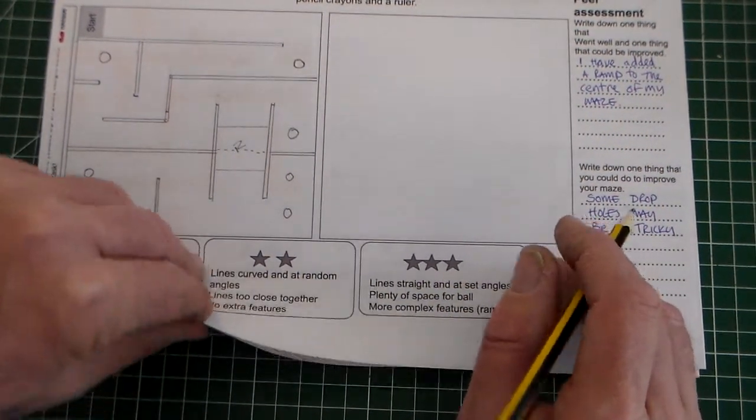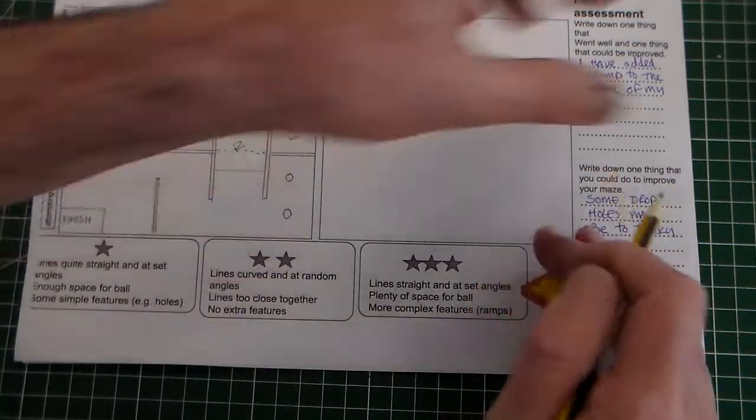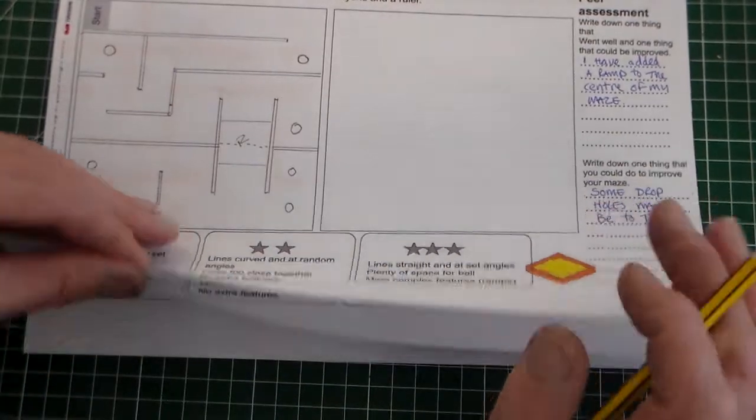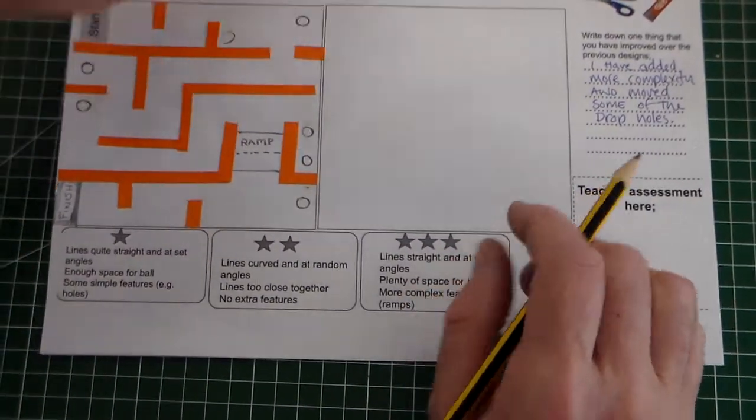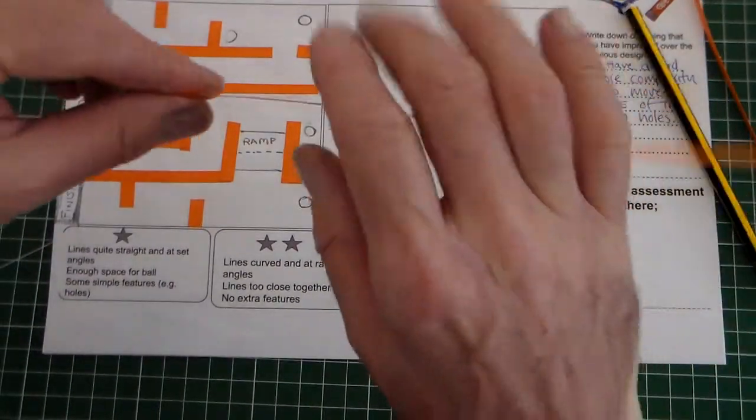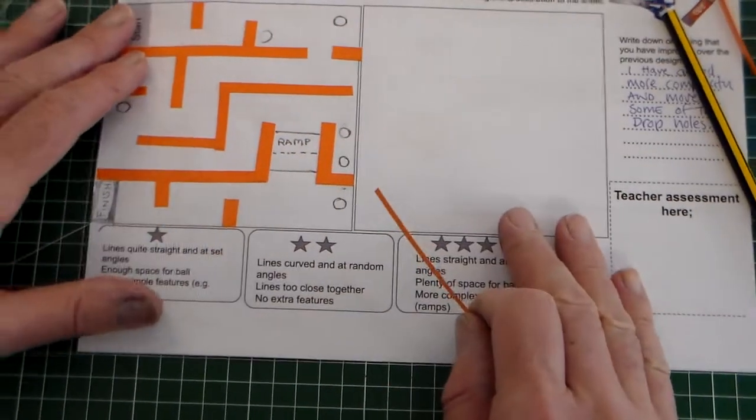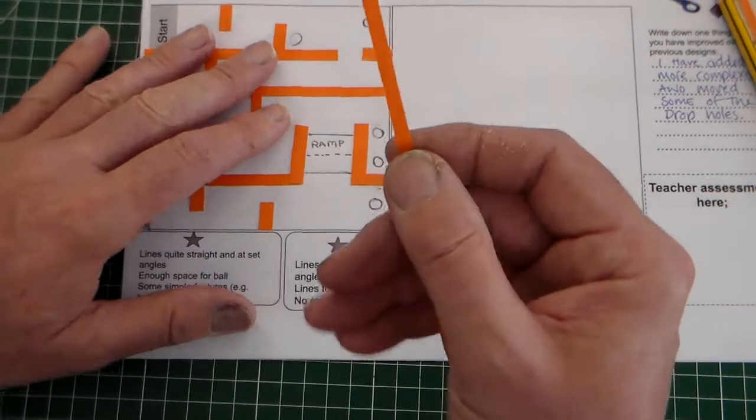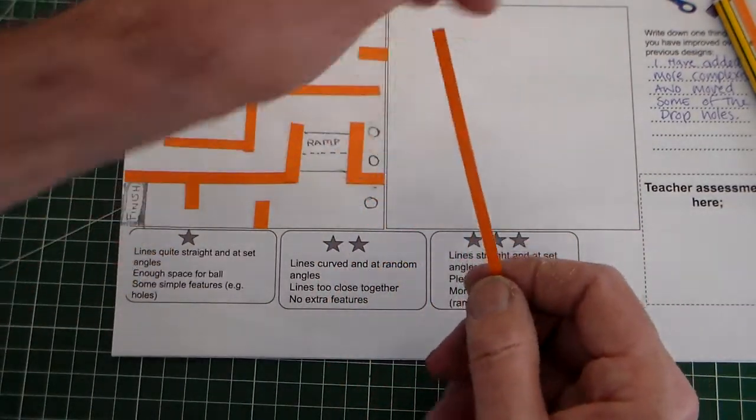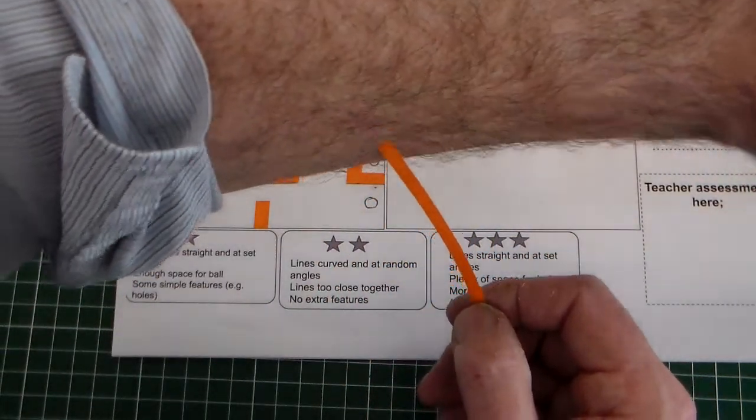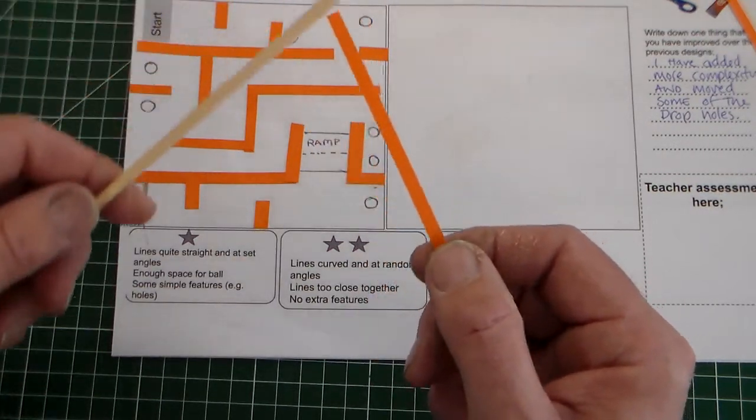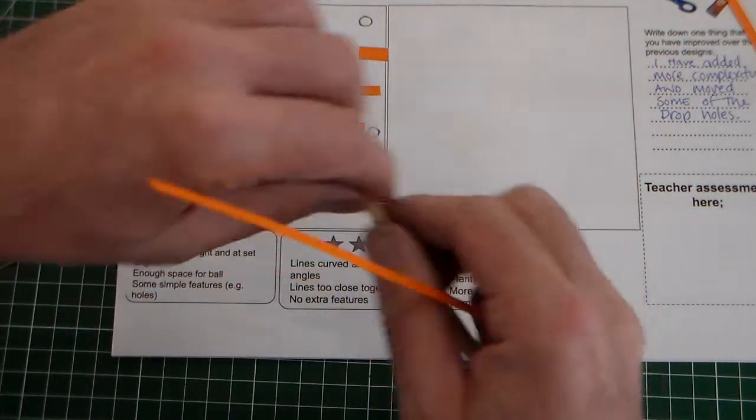So next, we're going to move closer to making our MDF part by using some card strips. So what I've got here is, this is Maze Design Ideas 2. And what I have here, I've got some thin card strips. And these are cut, and you can see that they're the same width. These are the pieces of wood that we're going to use.